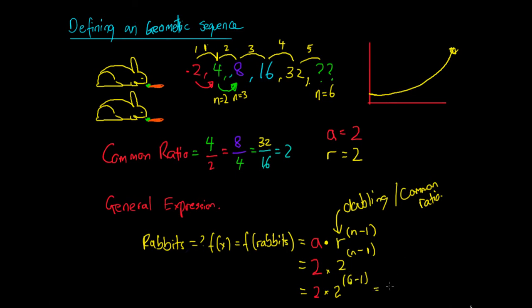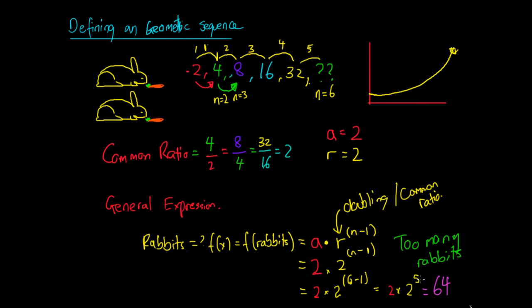So I initially started with 2 rabbits and they have doubled five times. How many rabbits am I going to have now? I think the answer is too many rabbits! But if we actually simplify this down, we can work out that I have 64 rabbits — 2 times 2 to the power of 5. So that's how we define a geometric sequence, and that is my rabbit problem. Thank you, guys — I will put out another video giving you some examples on this.